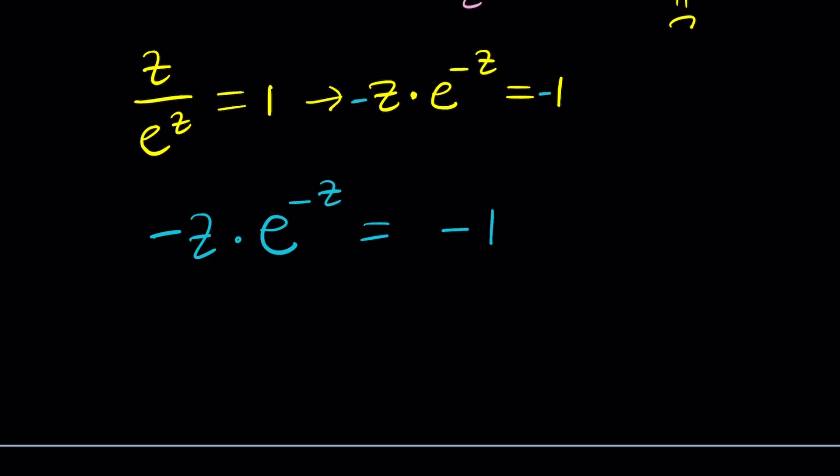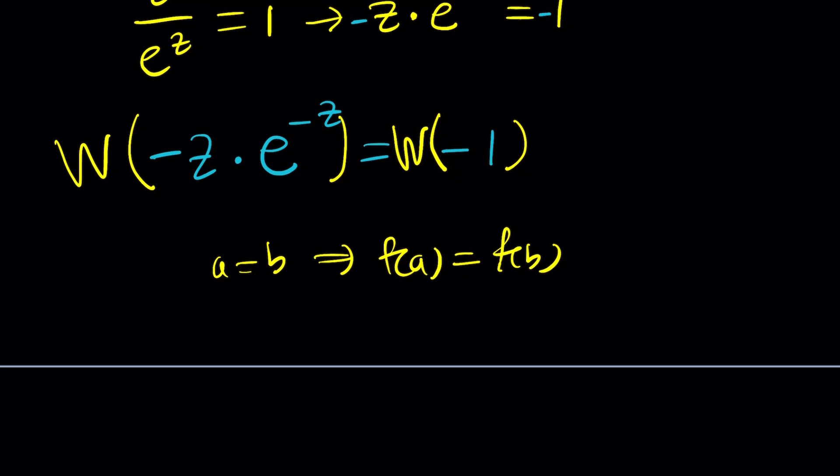We do know that this equation has no real solutions, so we shouldn't try to chase any real solutions unless we want to waste our time. But notice that it's in the form something times e to the power something. So let's go ahead and use Lambert's W function on both sides. W of this equals W of this. And by the way, this is something that you can always use—a principle with well-defined functions. If a equals b, then f(a) is always f(b).